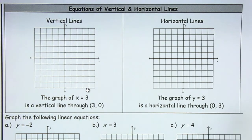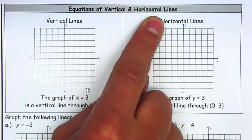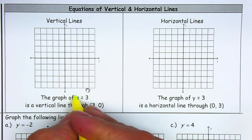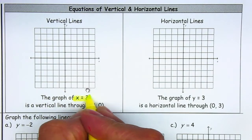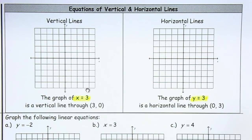Now on the back side, we're going to be exploring vertical and horizontal lines. Every time they give you an equation x is equal to a number, in this case 3, or y is equal to a number, in this case 3, then we are going to have a vertical or horizontal line.